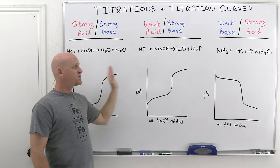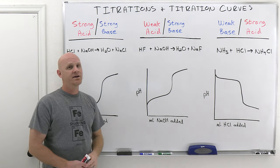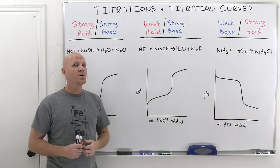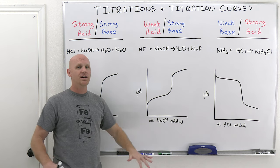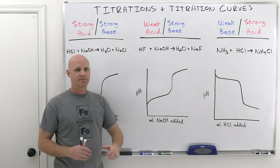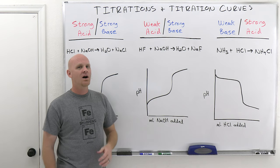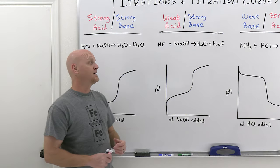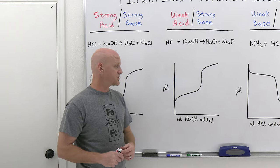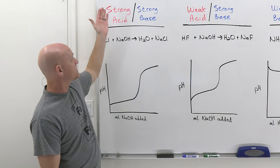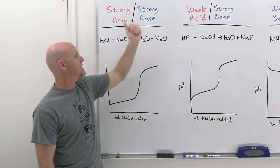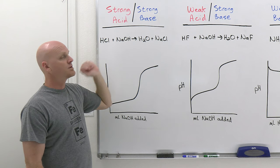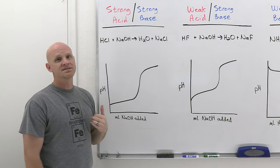All of the titrations we're going to look at here — either the acid or the base, or both — is going to be strong. We're not going to look at weak acid/weak base titrations at all, as that's not something you'll commonly come across in general chemistry. We'll start with strong acid/strong base, using HCl and NaOH.